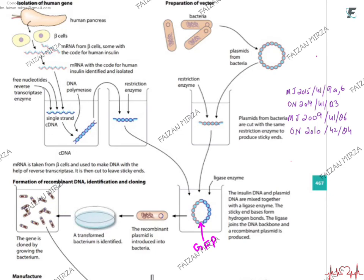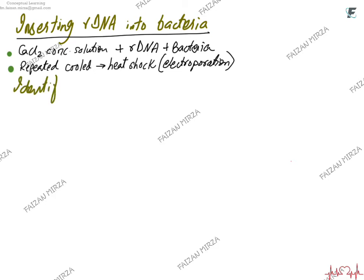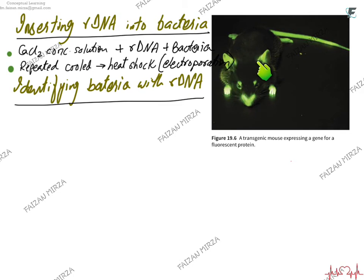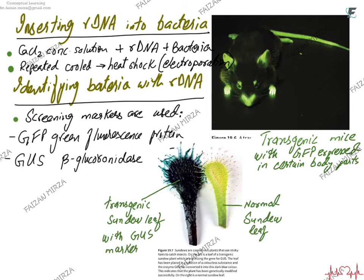The recombinant plasmid is added to the bacteria; transformed transgenic bacteria are identified by their fluorescence and grown in fermenters. To insert the recombinant DNA back into the bacteria, you place the bacteria in a concentrated solution of calcium chloride, add the recombinant DNA, and apply repeated cooling and heat shock — this is called electroporation. This produces large holes in the phospholipid bilayer of the bacteria, large enough for the plasmid to be taken up, although the success ratio is just one percent.